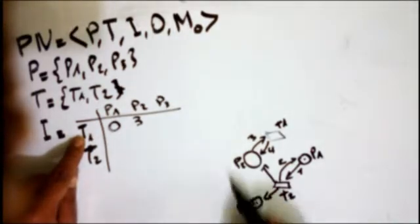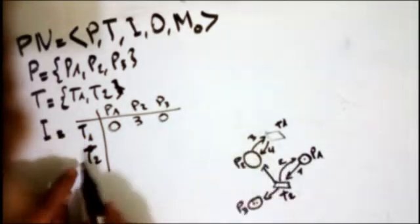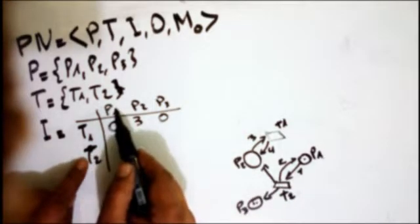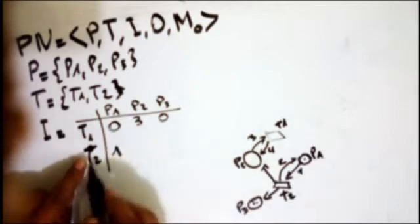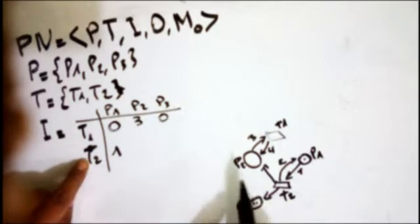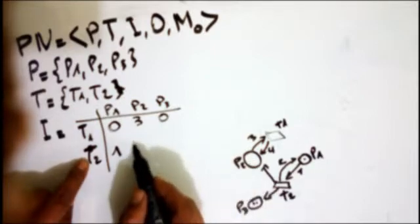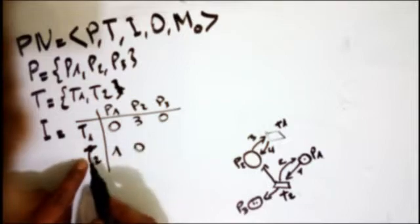For P3 to T1, there is no arc, so that is 0. Now for T2: the input from P1 to T2 is this edge here, labeled 1. For P2 to T2, there is no input arc from P2 to T2, so we write 0.